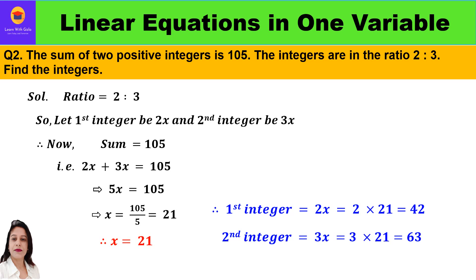The second question is: the sum of two positive integers is 105 and the integers are in the ratio of 2 is to 3. Find the integers. This is similar to question 1 — the only difference is that in question 1 we were given the difference, and here in question 2 we are given the sum of the two positive integers.